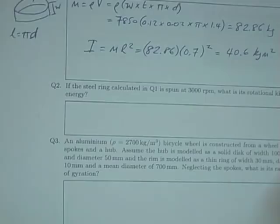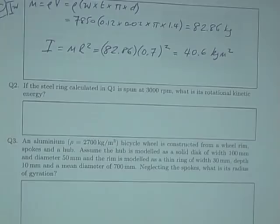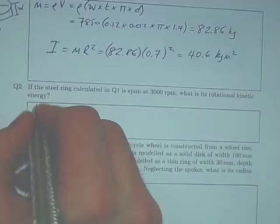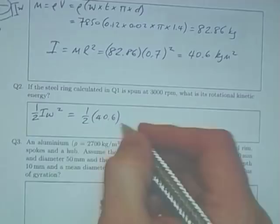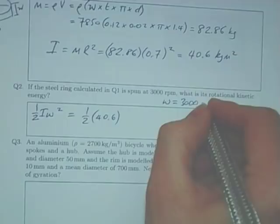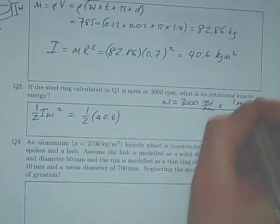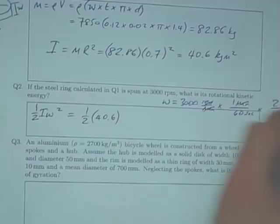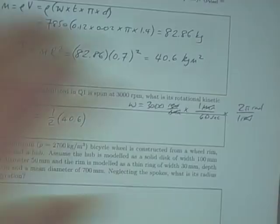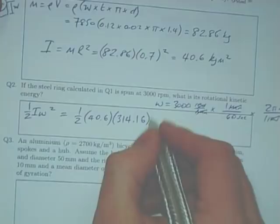Question 2: if the steel ring from Q1 is spun at 3000 rpm, what is its rotational kinetic energy? We use UK = ½Iω². Converting: ω = 3000 × 2π / 60 = 314.16 rad/s. So UK = ½ × 40.6 × 314.16² = 2 × 10⁶ J, or 2 megajoules. That 82 kg disk, 1.4 m in diameter, spinning at 3000 rpm contains 2 MJ of energy — that's a lot.